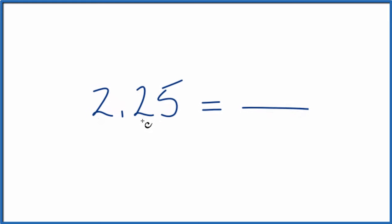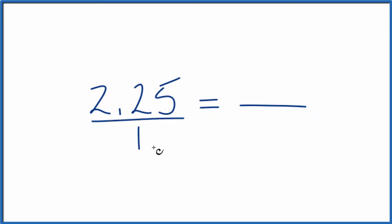First, we want to consider this 2.25 over 1. It's still 2.25, we're just dividing by 1, but this gives us the start of fraction form.